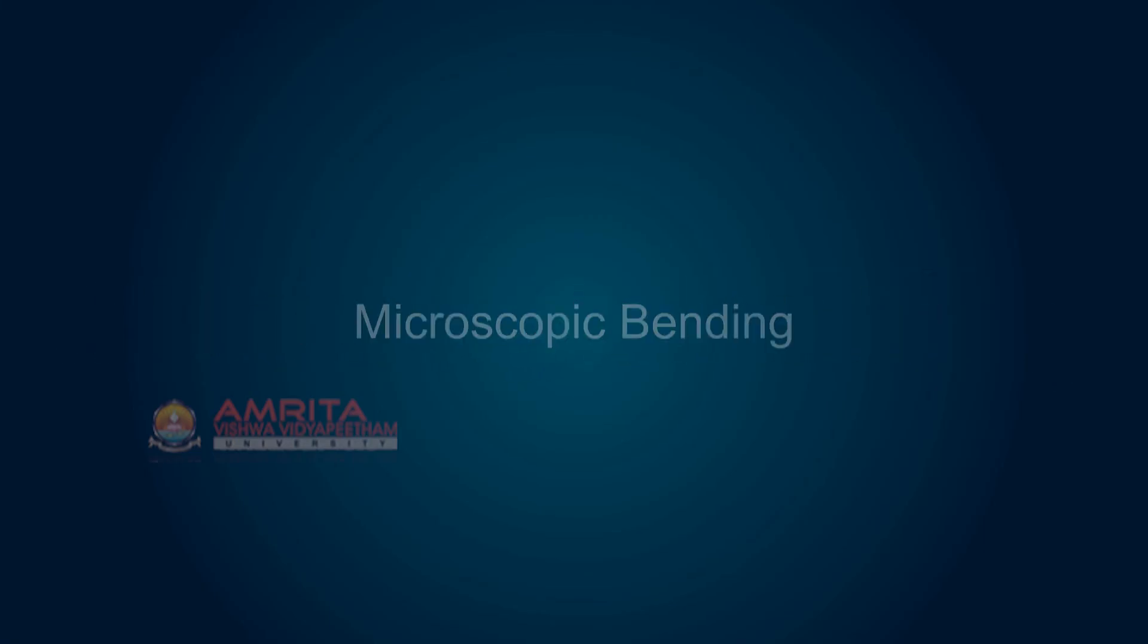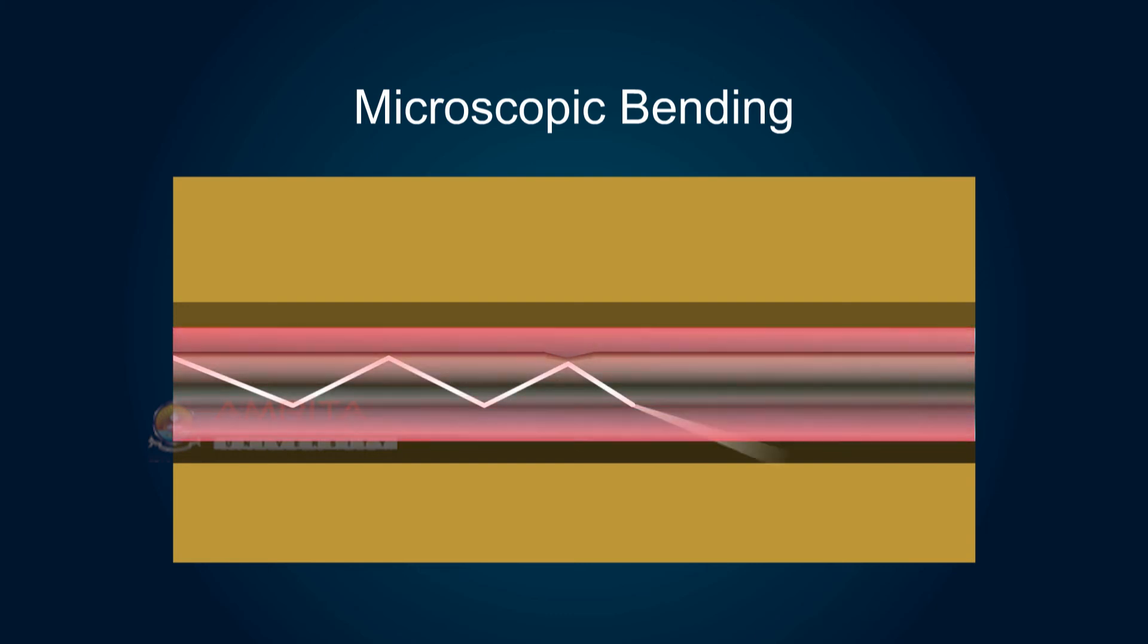In microscopic bending, either the core or cladding undergoes slight bends at its surface. It causes light to be reflected at angles when there is no further reflection.